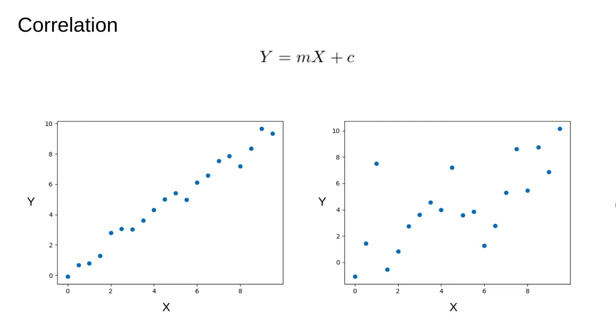Consider the two scatter plots here. Clearly the relationship on the left is somehow more linear than the one on the right. The correlation coefficient is a number which attempts to quantify this.